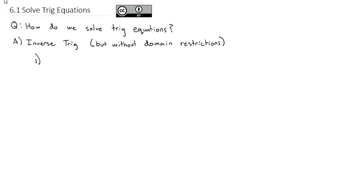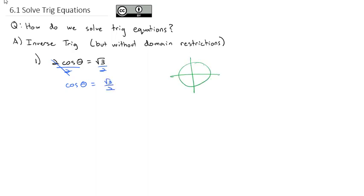For example, if I want to know what the angle is for 2 cosine theta equals the square root of 3, we can solve this quickly by dividing both sides by 2 so that cosine of theta equals root 3 over 2. Then I just need to think about my unit circle. Cosine is the x-coordinate, so we want a larger x-coordinate, which happens twice — at pi over 6 and at 11 pi over 6.